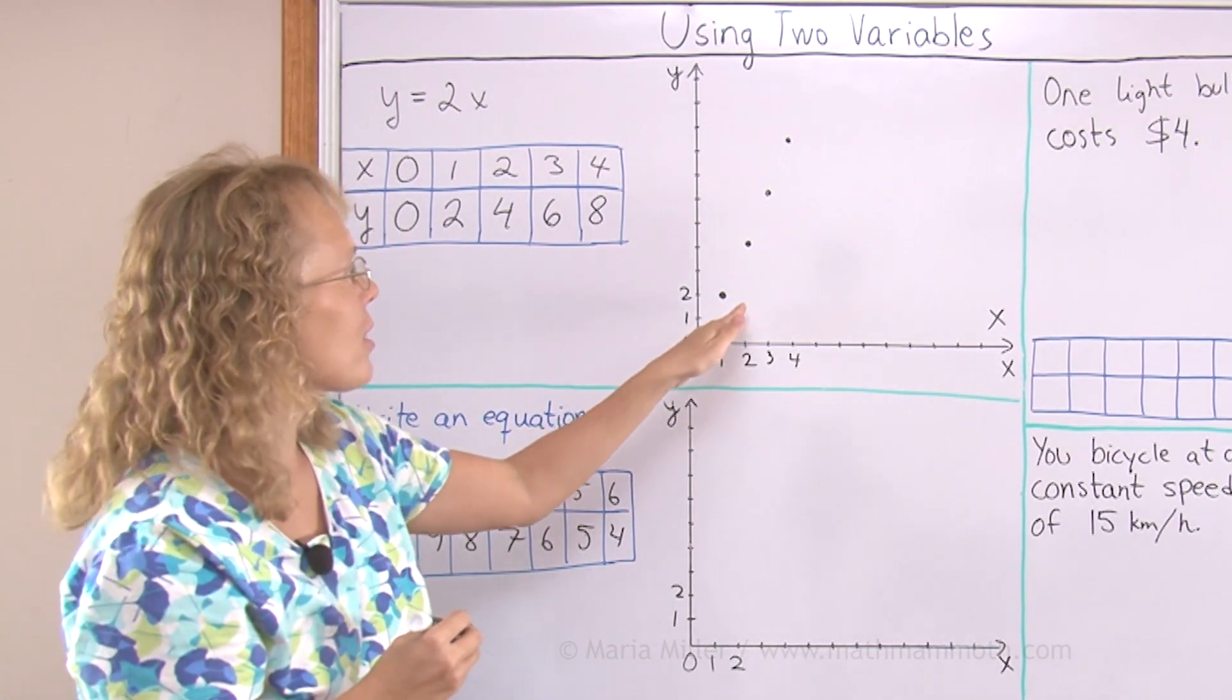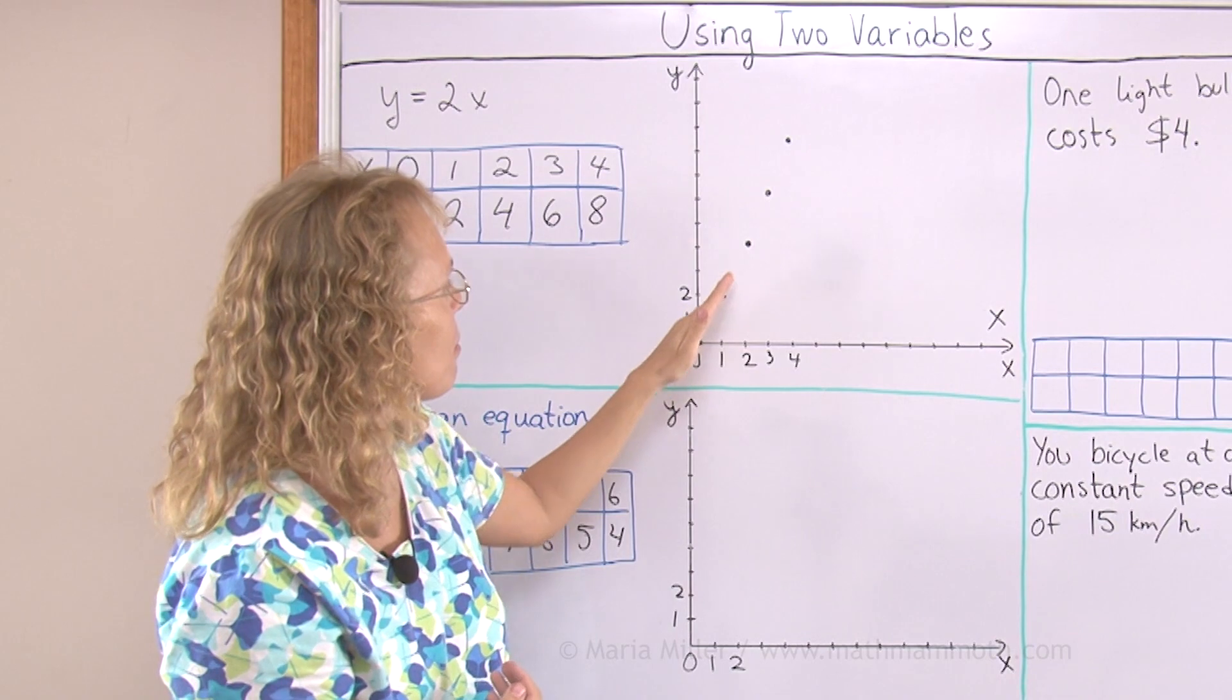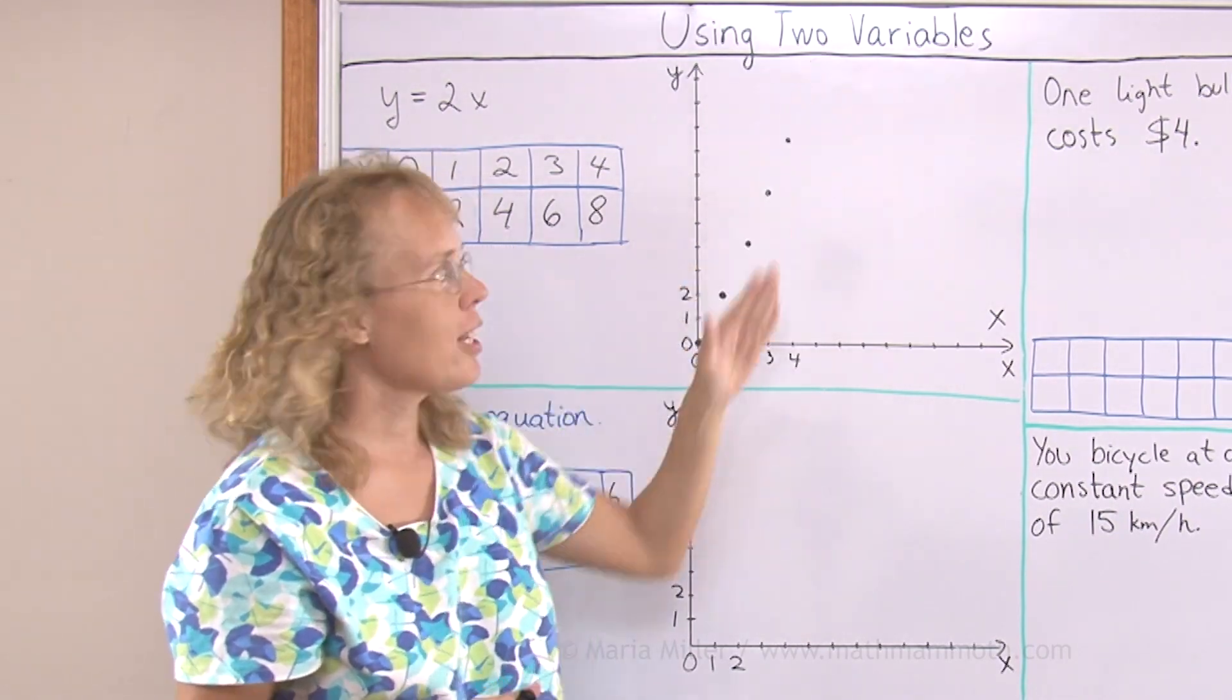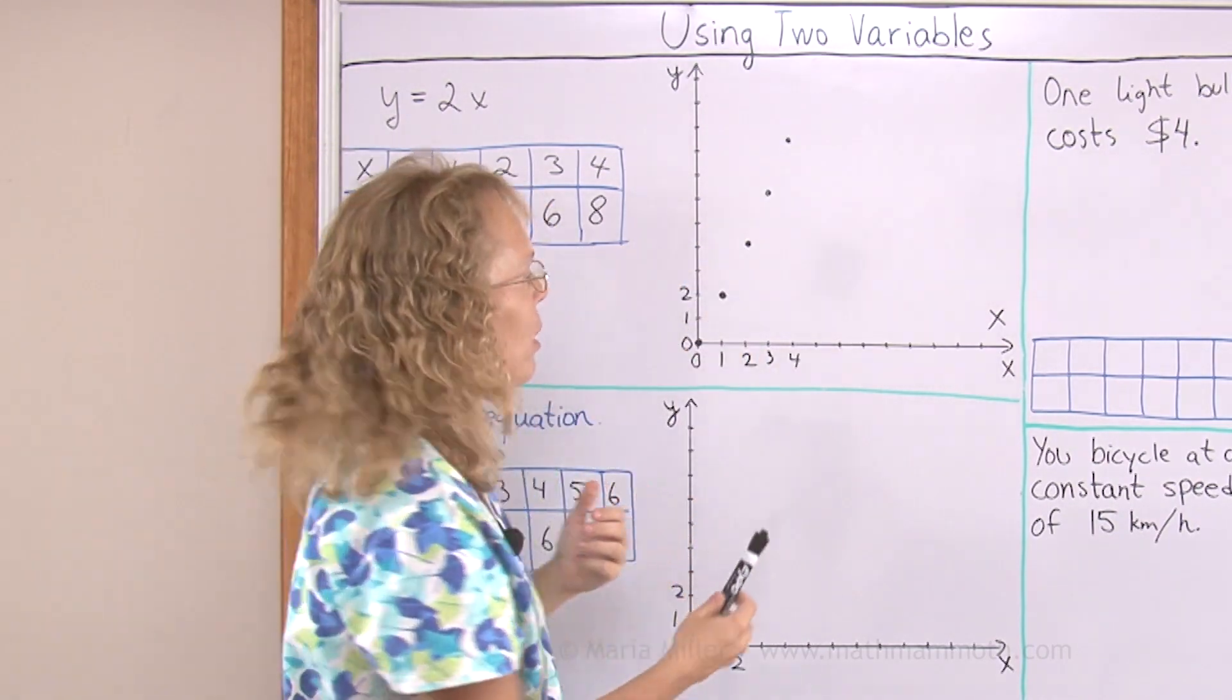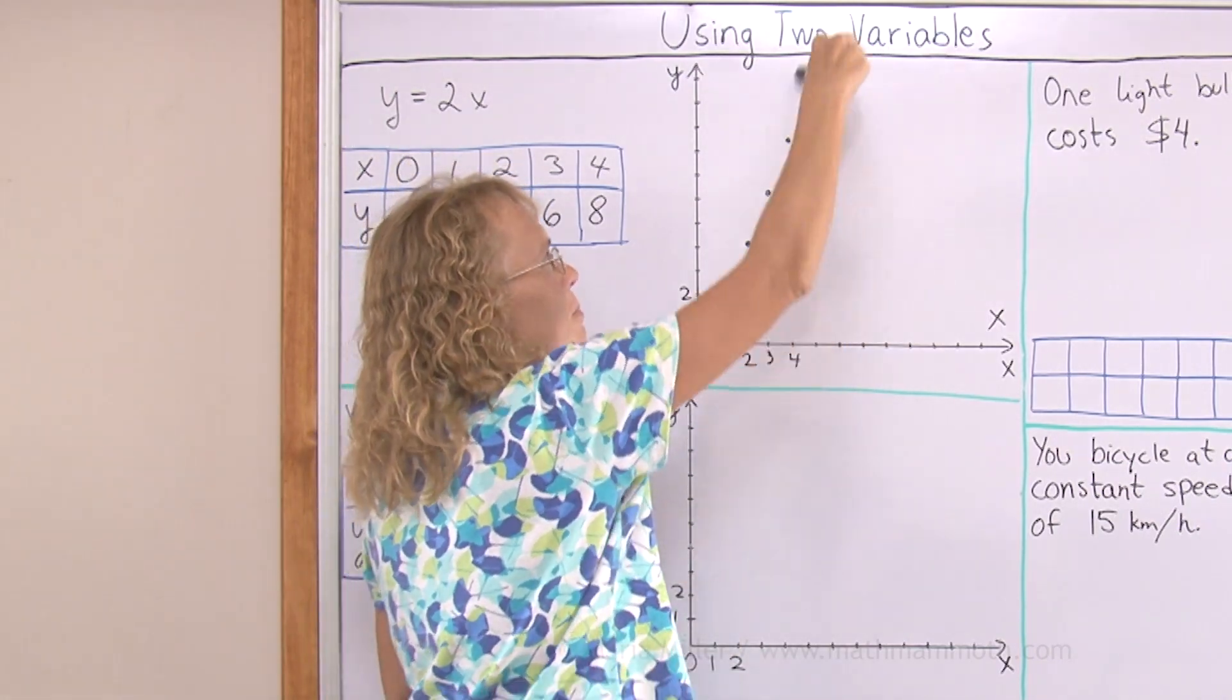You can see now here that this graph forms a pattern. These dots are here as if on a line. And it continues the same way. If I go 5 and 10, 6 and 12 and so on.